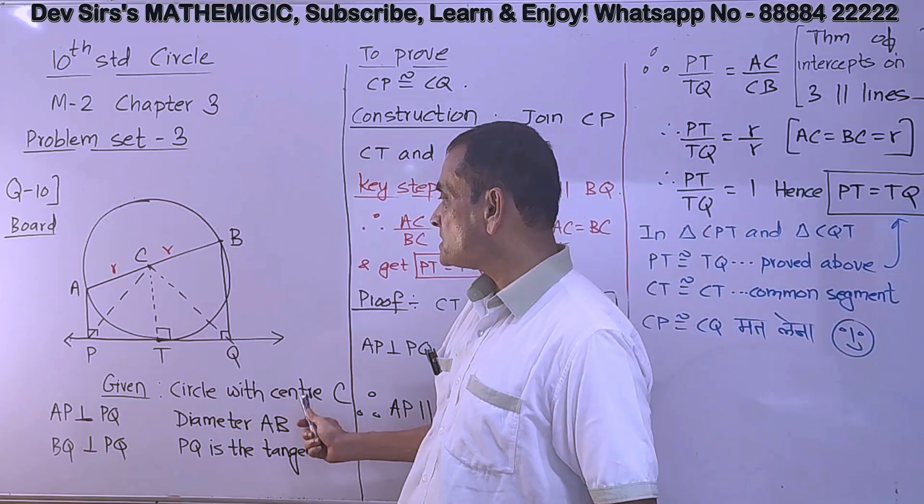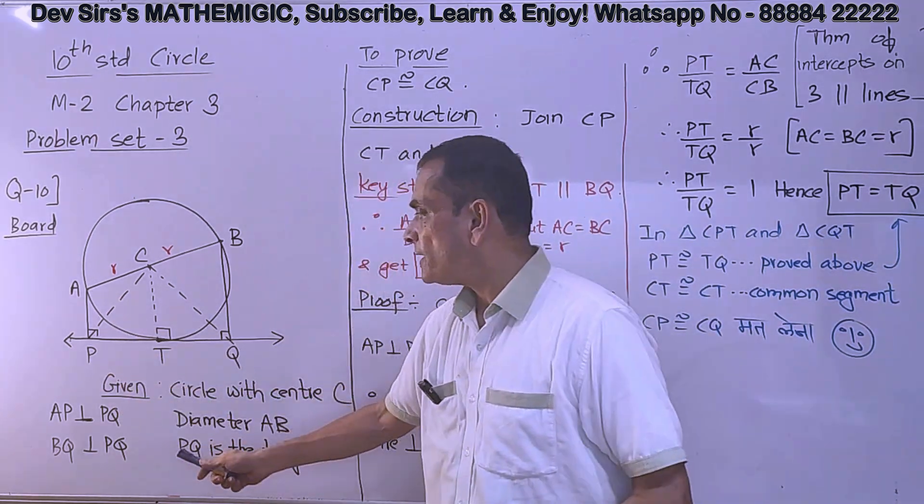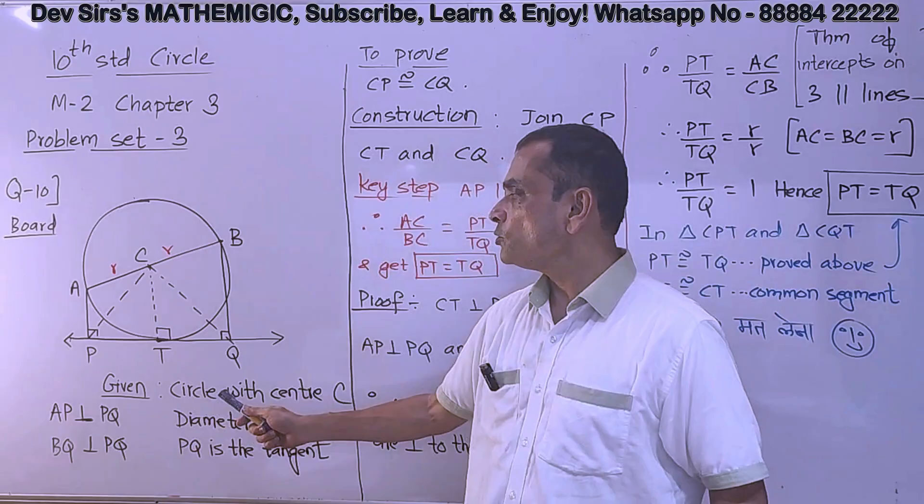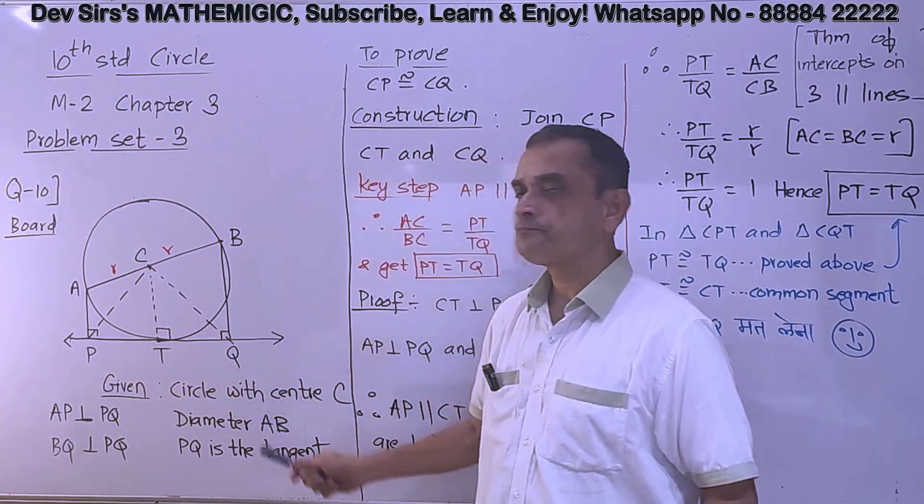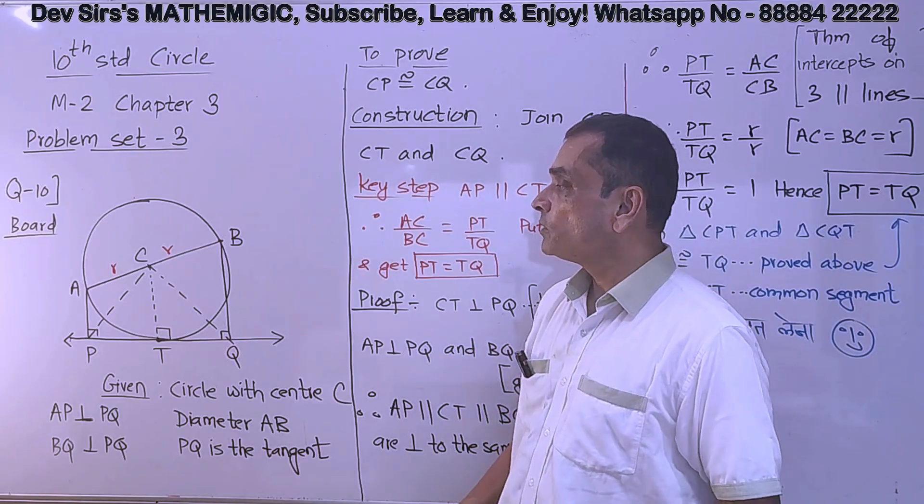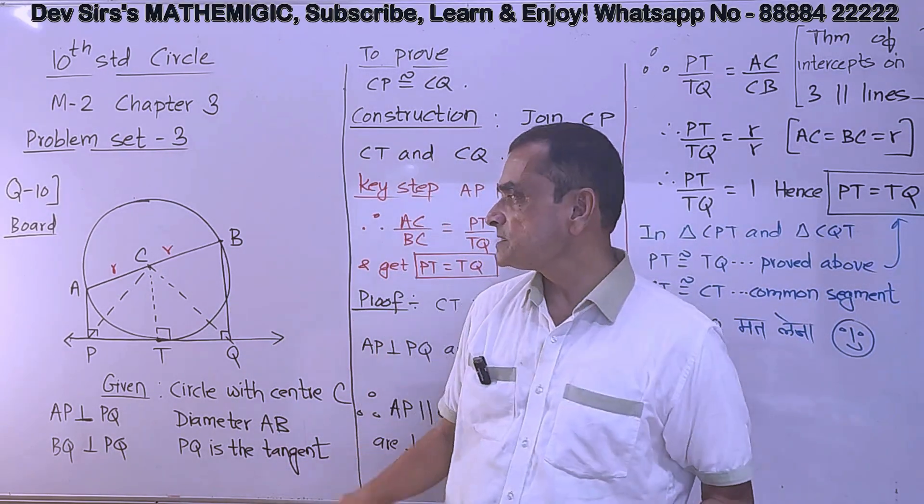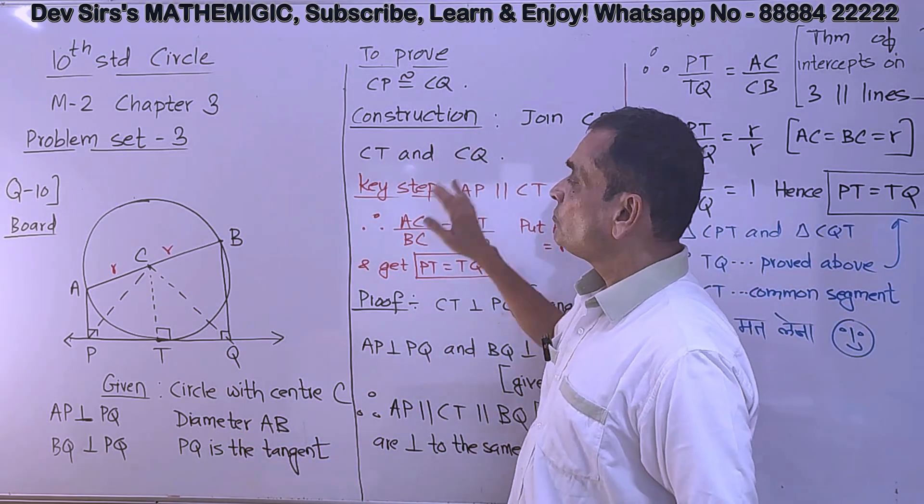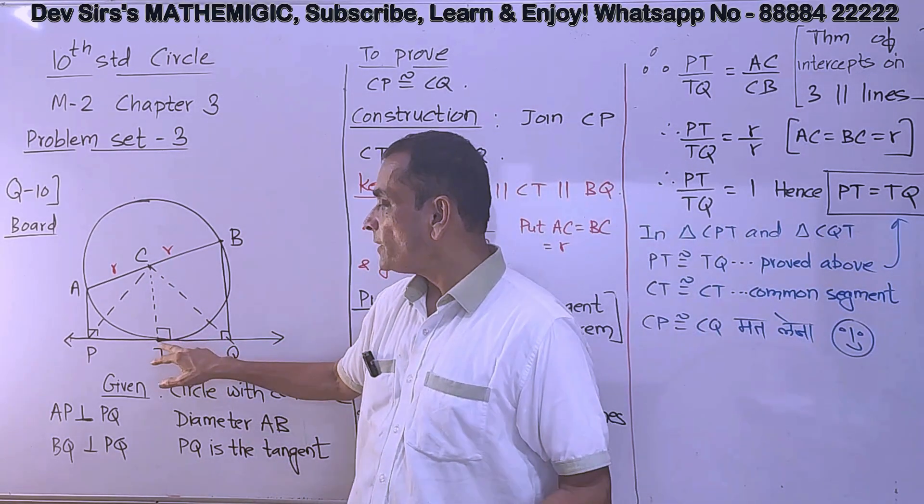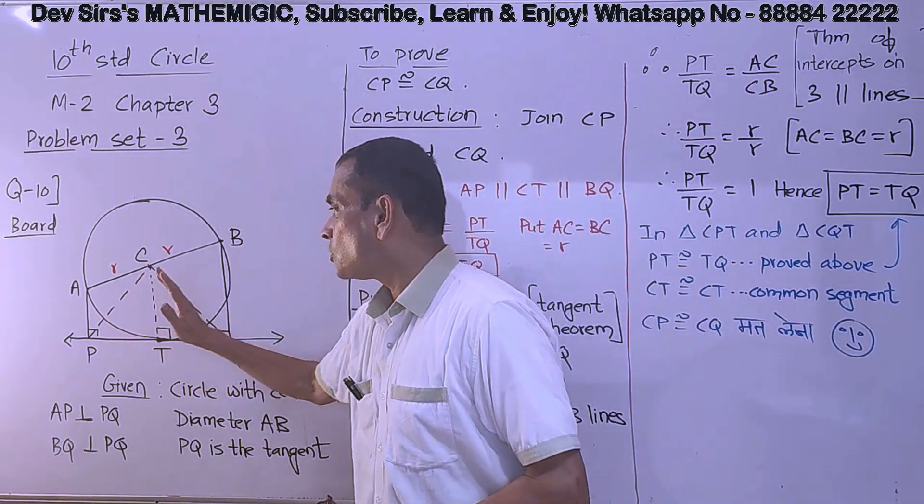What is given? Circle with center C. Diameter AB. PQ is a tangent. AP perpendicular to PQ. BQ also perpendicular to PQ. Clear? These two are perpendicular. Then, to prove CP congruent to CQ. Now, in the textbook, the diagram that is given doesn't have CP or CQ joined. So as construction, we have joined CP, CQ and CT also. T is the point of contact of tangent PQ. So we have to prove CP congruent to CQ.